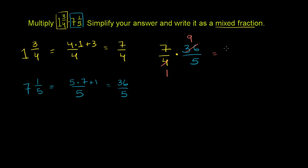So now this becomes 7 times 9, and what's 7 times 9? It's 63 over 1 times 5, over 5. So now we have our answer as an improper fraction, but they want it as a mixed number, or as a mixed fraction.